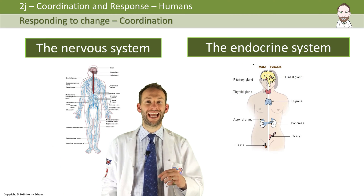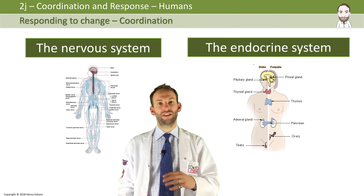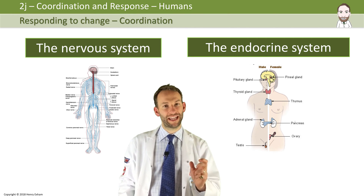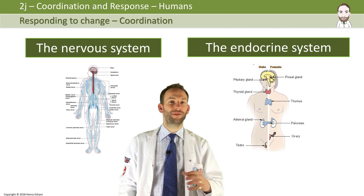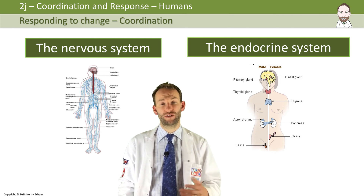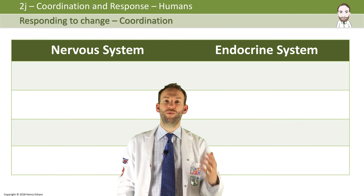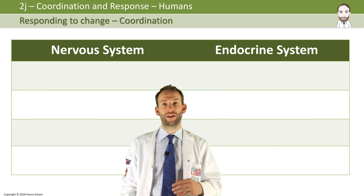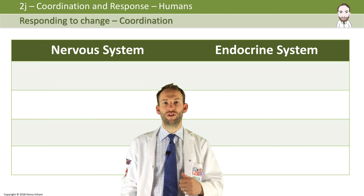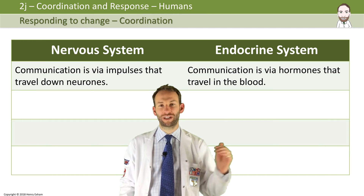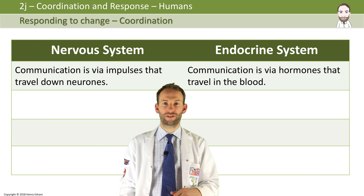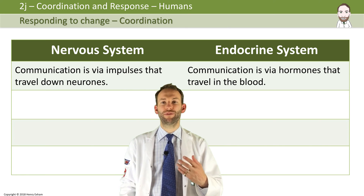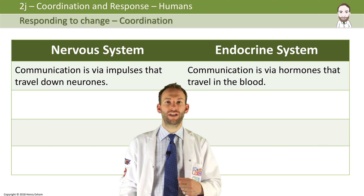There are two systems in humans that connect the receptors to the effectors: the nervous system and the endocrine system. They work together, and depending on what the stimulus is, the organism can decide which system to use. Each system has different pros and cons. The nervous system is all to do with rapid communication via electrical impulses that get fired along special cells called neurons. In the endocrine system, it's a much slower response and it happens via hormones that travel in the blood — a completely different communication system.